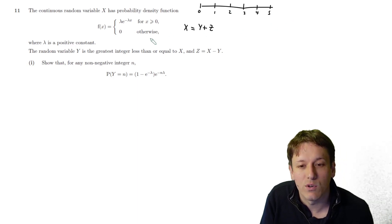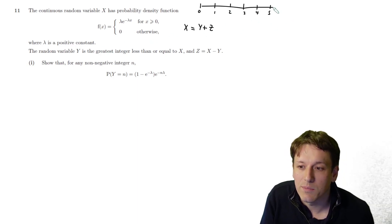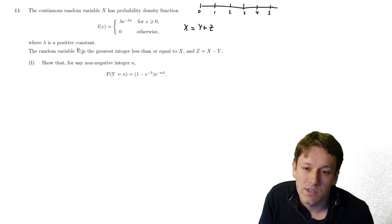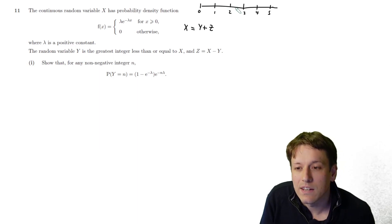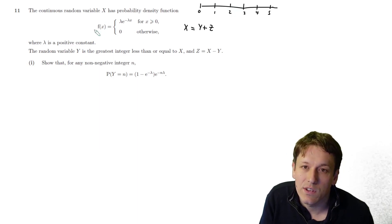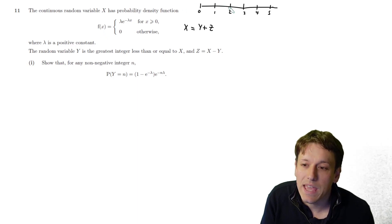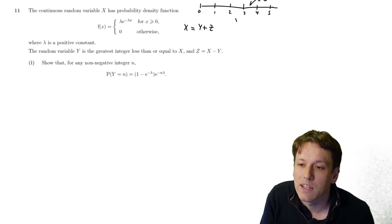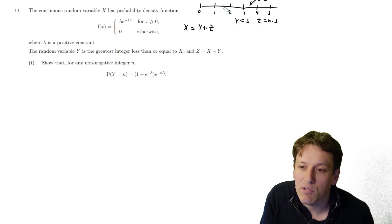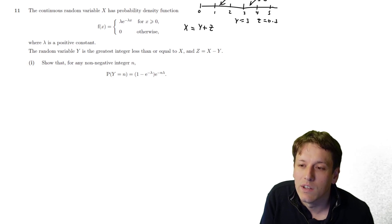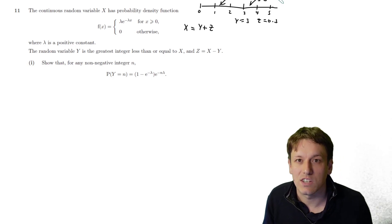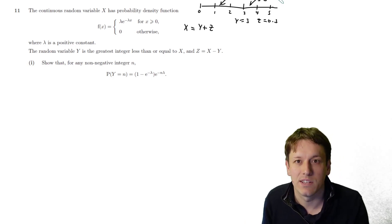X has possible values from zero upwards. We can think of Y as a discrete random variable taking values 0, 1, 2, 3, 4, 5, and so on up to infinity. Z is the bit left over: if an observation gives X = 3.3, then Y = 3 and Z = 0.3; if X = 1.2, then Y = 1 and Z = 0.2.